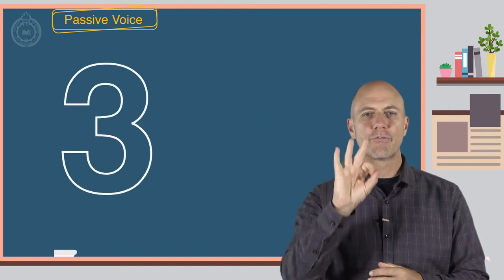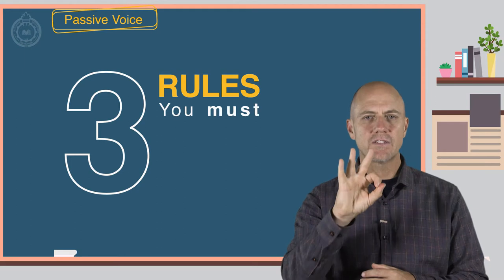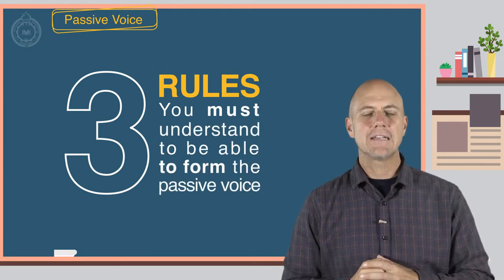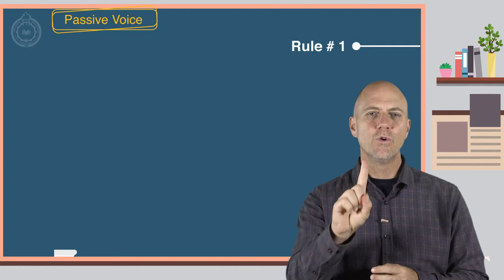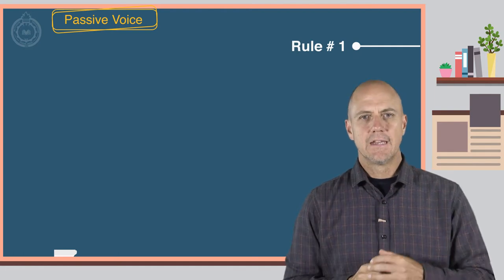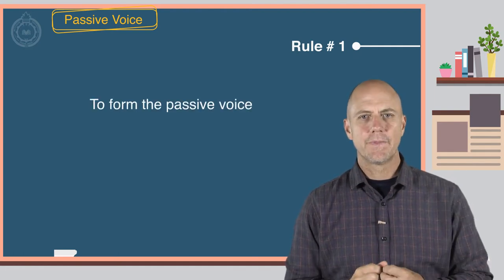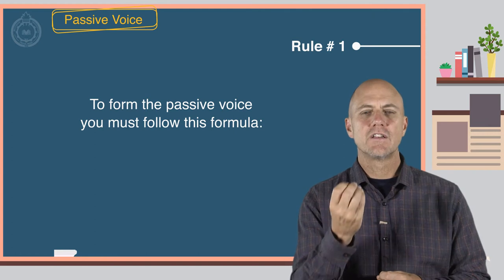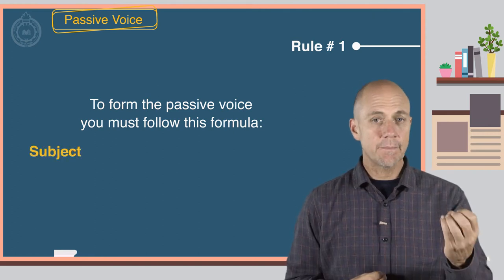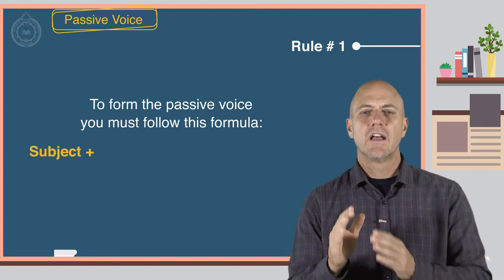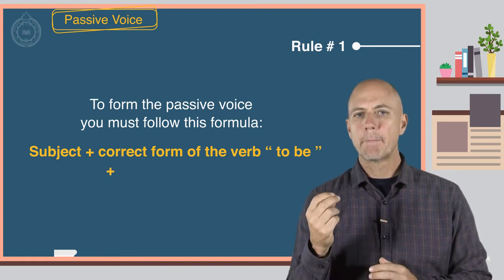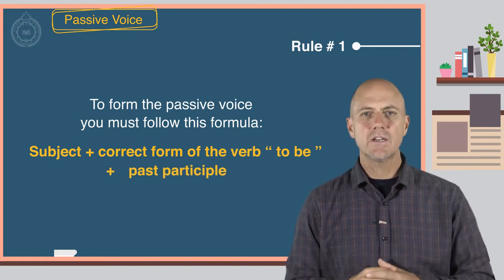There are three rules you must understand to be able to form the passive voice. Rule number one. To form the passive voice, you must follow this formula. Subject plus the correct form of the verb to be plus the past participle.